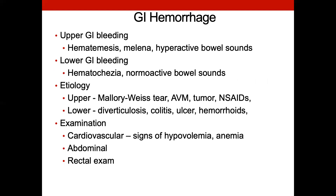GI hemorrhage — when we think bleeding in the GI tract, we go back to GERD and PUD for upper GI bleeding. Upper GI bleeding presents with vomiting from streaky blood to bright red blood, and if they're defecating, it's going to be dark or black — you think melena, hyperactive bowel sounds. With a lower GI bleed, that's where you think more of the red blood in the stool. A lower GI bleed may be something like an internal hemorrhoid that's ruptured. For upper GI bleeds, the most common causes are NSAIDs and H. pylori.